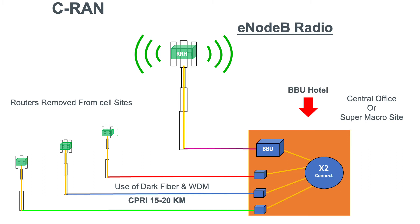Also, in the BBU hotel — as it's sometimes going to be called — we'll provide a router so each one of the eNodeBs can be reached via the router. That router will also provide connectivity to the EPC, or the Evolved Packet Core, using a well-defined S1 interface.